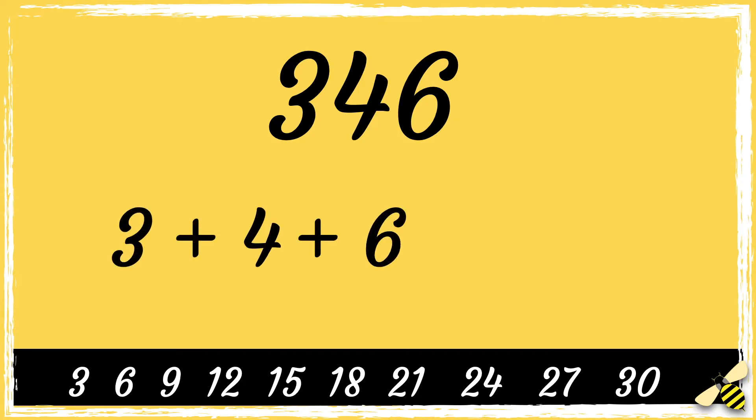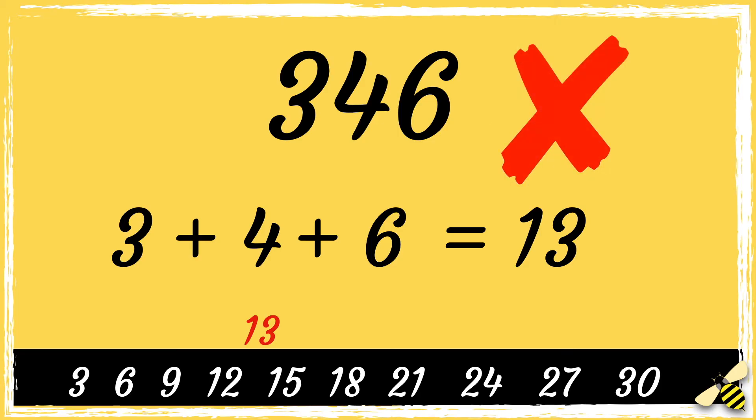Let's have a look at another one. 346. So first we add the digits. 3 add 4 add 6 equals 13. 13 is not a multiple of 3, which means that 346 is not divisible by 3.